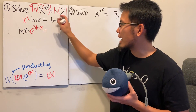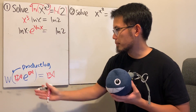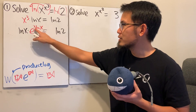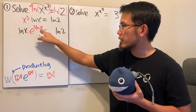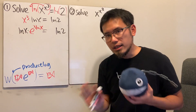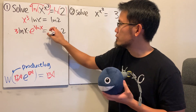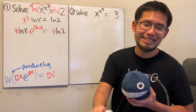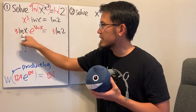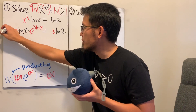On the right-hand side we have ln 2. Now, can we apply the Lambert W function yet? No, not yet — because we have 3 times ln x here, but over there we do not have a 3. It's okay though, because we can just multiply the 3 on both sides. Now this and that are the same form, and we can apply the Lambert W function.